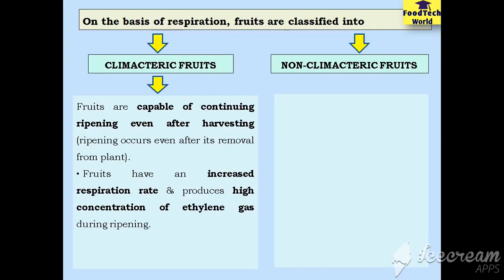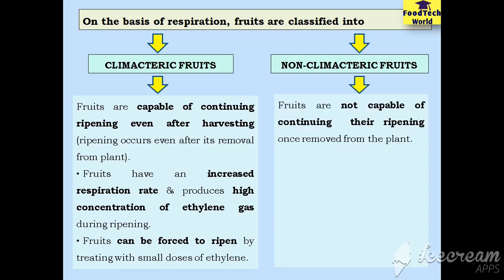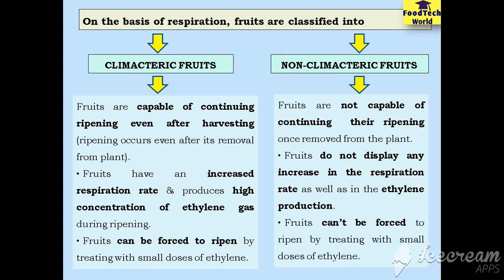Climacteric fruits have high respiration rate and produce high concentrations of ethylene gas — these are the two factors that promote ripening. When unripe climacteric fruits are harvested, they can be forced to ripen by treating with small concentrations of ethylene gas. Non-climacteric fruits are not capable of continuing their ripening process once removed from the plant; they don't display high respiration rate, don't produce high concentrations of ethylene, and can't be forced to ripen by treating with small doses of ethylene.